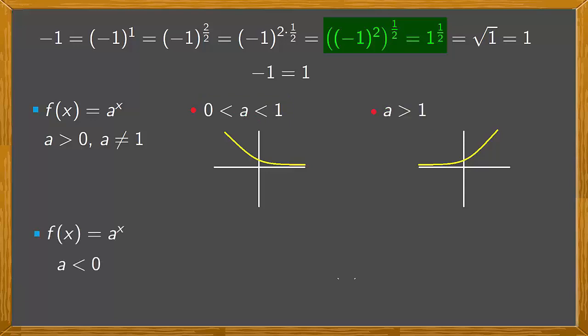What about when a is less than zero? Now we run into a problem. The exponential function when a is negative is a horrible thing. For example if you have f(x) = (-2)^x you couldn't calculate the image of a half or of a quarter and so on. It's a disaster.